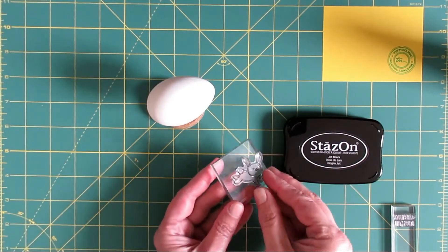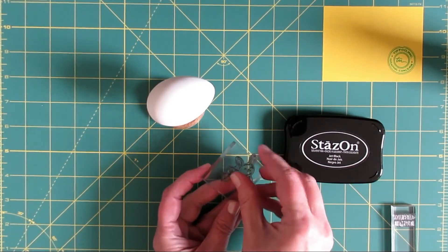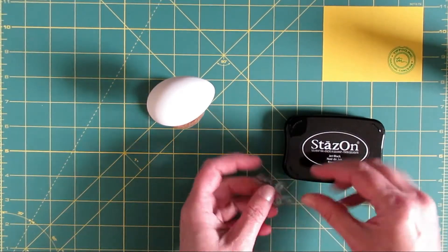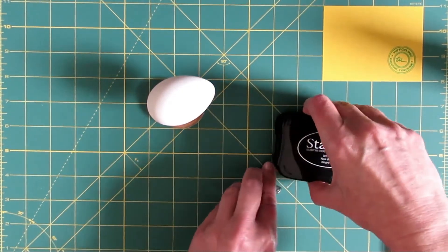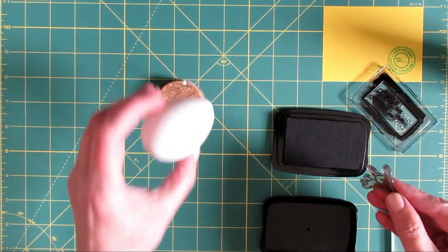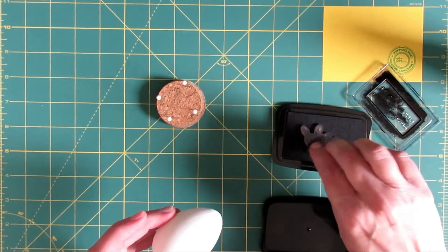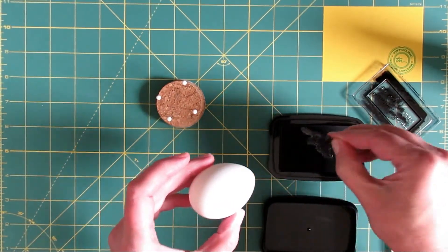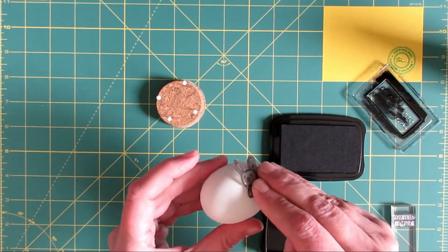So use the stamp either on a small acrylic block or just alone, depending on the stamp. I'm right handed, so I hold the egg in my left hand, and then I sort of roll the stamp over the surface of the egg. You can move the egg under the stamp, or you can move the stamp over the egg, whichever comes more naturally.